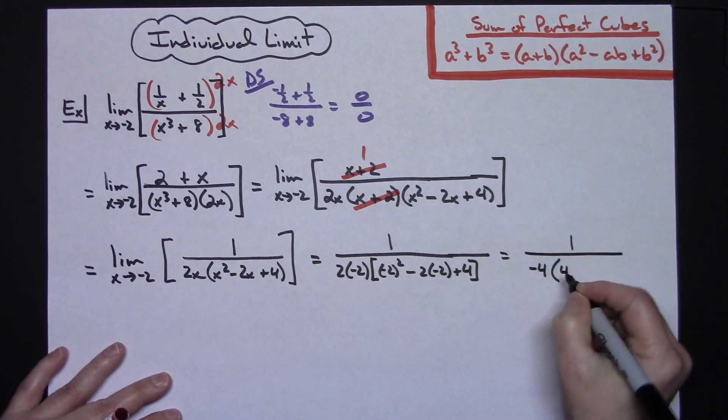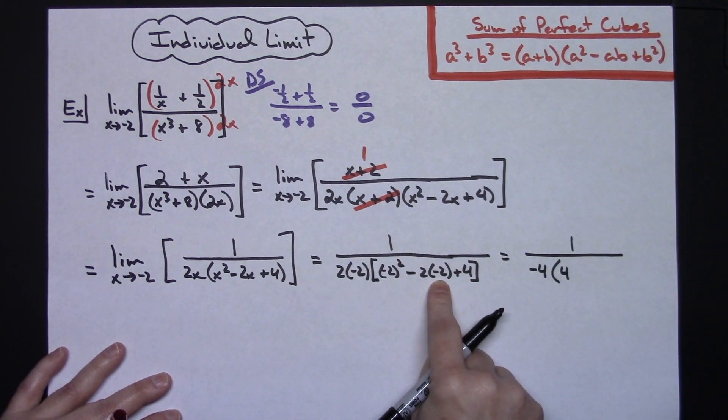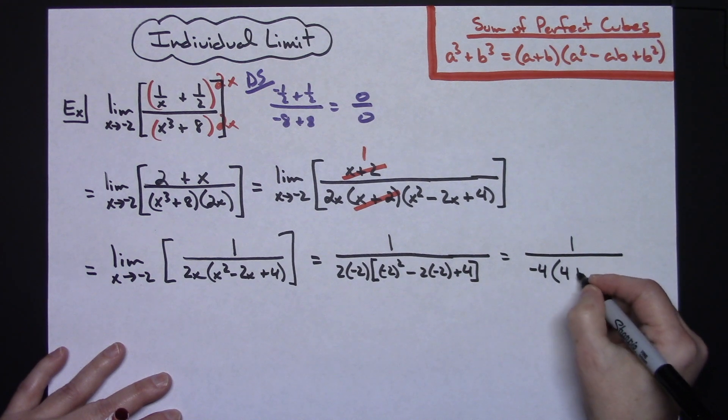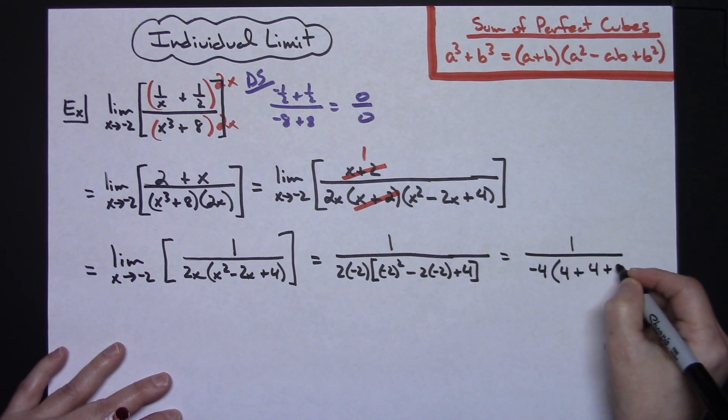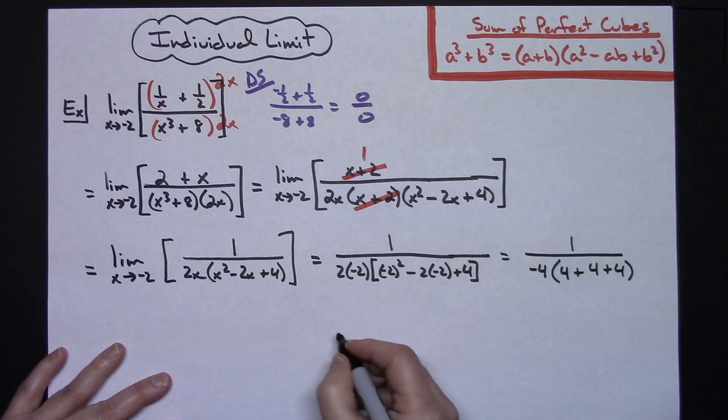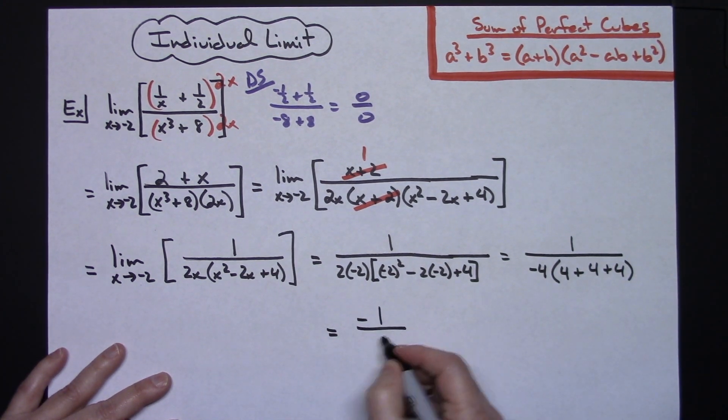Let's crank this out pretty quickly here. We'll have a negative 4 there. Squaring there we'll have a 4, and then we're going to have 2 times 2 is going to be a 4 there, and then plus another 4. This should be a negative 1 over 48.